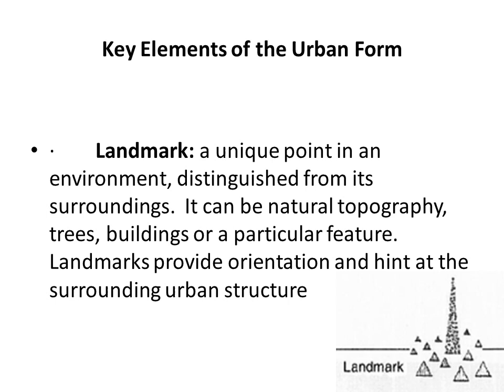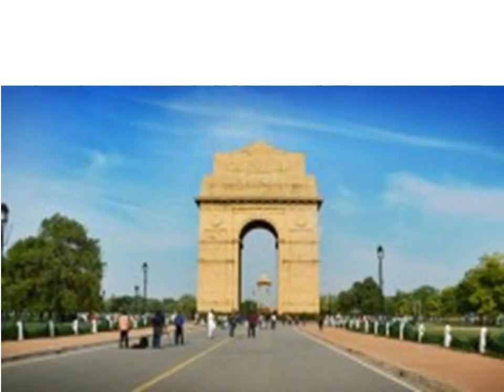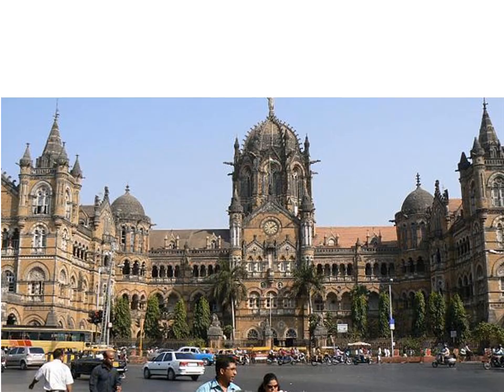The next element of urban form is landmarks — a unique point in an environment distinguished from its surroundings. It can be a natural topography, trees, buildings, or a particular feature. Landmarks provide orientation and hint at the surrounding urban structure. A landmark is a physical element with unique and special visual features that has a point-specific location and can be identified from a distance. This is India Gate in India — an example of a landmark.